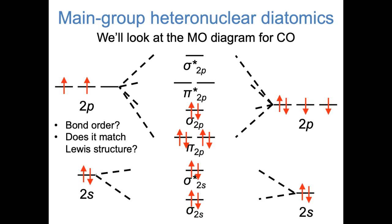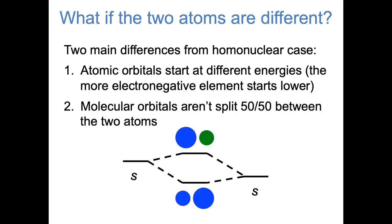If you draw a Lewis structure of carbon monoxide and follow the octet rule, you'll see that the only way to make it work is to draw a triple bond between carbon and oxygen. The other important way that molecular orbitals change when the two atoms in a diatomic molecule are different is that the molecular orbitals are no longer split exactly 50-50 between the two atoms. When the two atoms are the same, an electron in the bonding or the antibonding orbital is equally likely to be on the atom on the left or the atom on the right. But when the two atoms are different, an orbital can be weighted one way or the other.